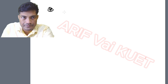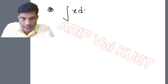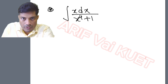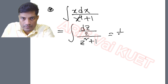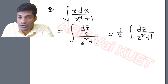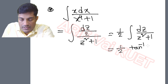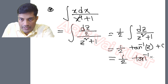Coming back to the integral of x dx divided by x to the power 4 plus 1 — substituting x dx with dz/2 and x squared with z gives us one half times the integral of dz divided by z squared plus 1. The integration of 1 by x squared plus 1 is tan inverse x. So the answer is half times tan inverse z plus c, which equals half tan inverse of x squared plus c. That is the final answer.